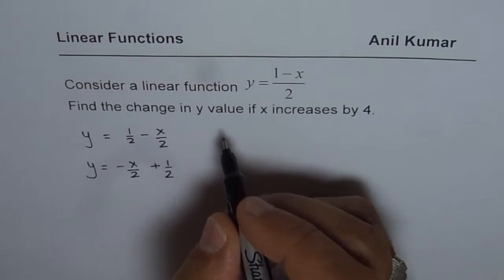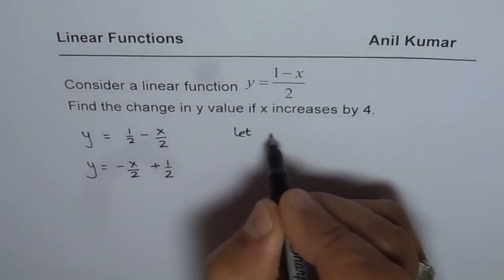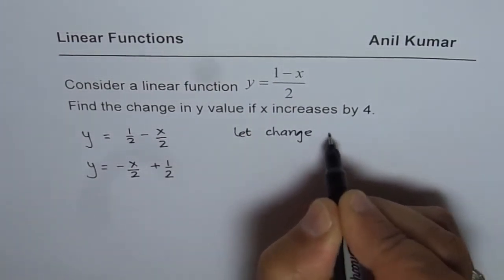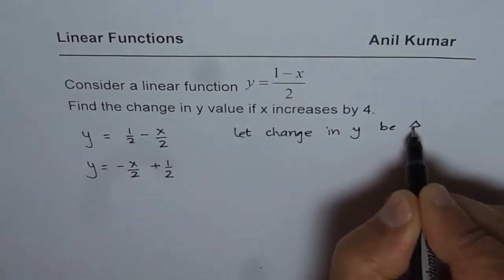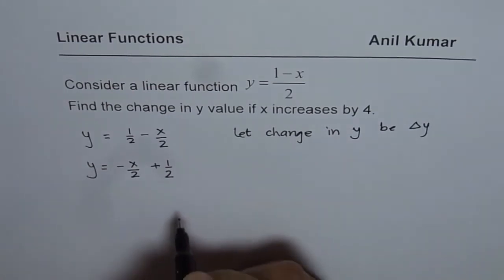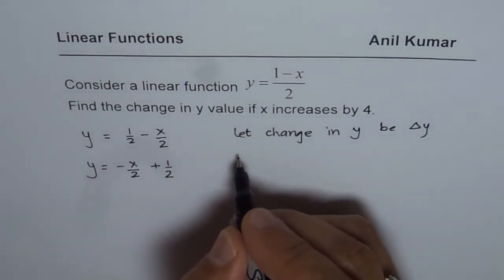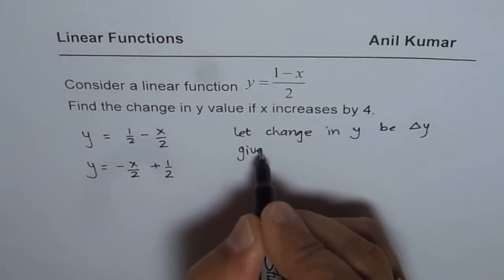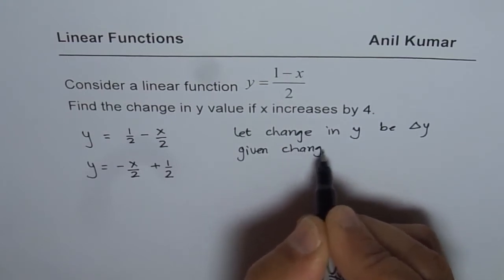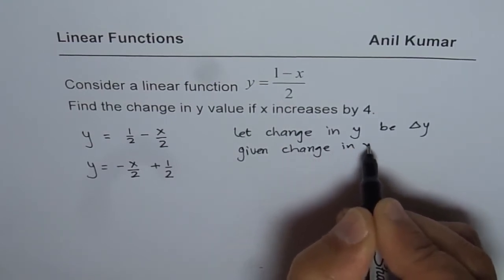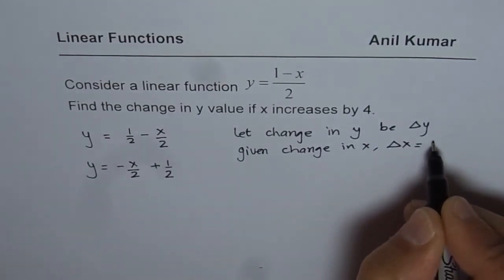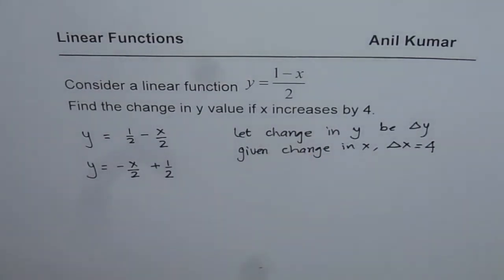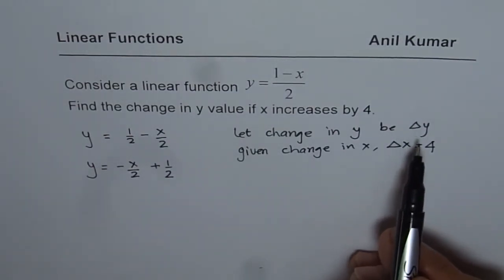So we say, let change in y be delta y, right? That is the change in y. And what we are given is, we are given change in x. That is, we are given that delta x is equal to 4. That is, it increases by 4 means plus 4.